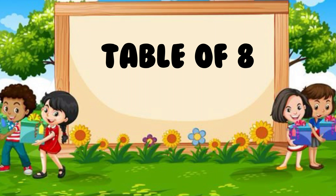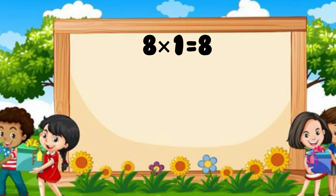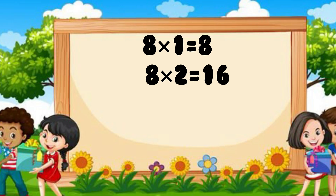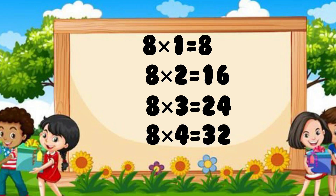Table of 8. 8 ones are 8. 8 twos are 16. 8 threes are 24. 8 fours are 32. 8 fives are 40.